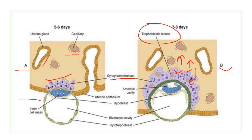Trophoblastic processes enter the blood vessels and form junctional complexes with the endothelial cells. Once the blood-filled lacunae have formed, the syncytiotrophoblast changes character from invasive to non-invasive and no longer secretes lytic enzymes. The leakage of blood from the uterus at this time is called implantation spotting.